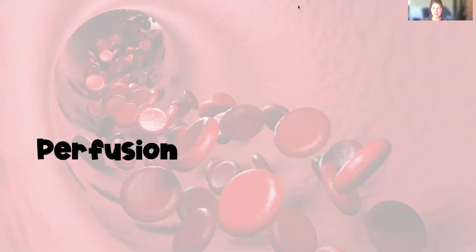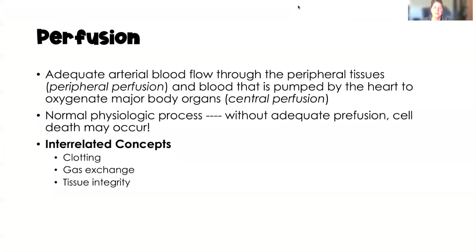Last time we talked about gas exchange — a very important core concept for us as nurses — and equally as important is the concept of perfusion. Perfusion is defined as adequate arterial blood flow through the peripheral tissues, called peripheral perfusion, and blood that is pumped by the heart to oxygenate major body organs, called central perfusion. We need both to function. Perfusion is a normal physiologic process; however, without adequate perfusion, cellular death can occur, affecting our organs and all body function.